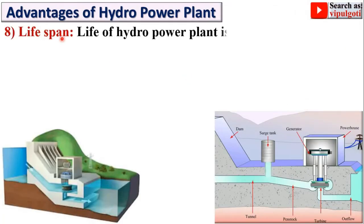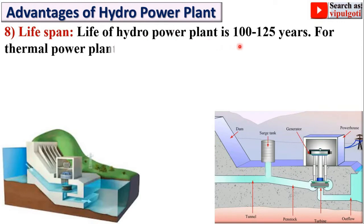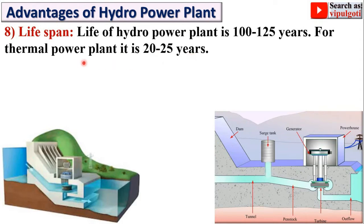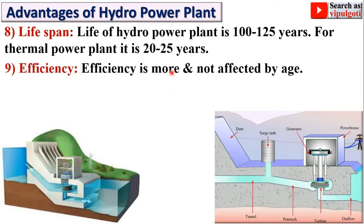Next: Lifespan. The life of a hydro power plant is approximately 100 to 125 years, compared to only 20 to 25 years for a thermal power plant — a huge difference. Additionally, the efficiency of a hydro power plant is higher and is not affected by age.